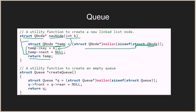Another utility function is createQ. It creates a struct q pointer, allocates it memory of size struct q, and initializes the front and rear to null — essentially creating a new empty queue with no elements. Once done, it returns the queue, which is the root of the linked list implementation.